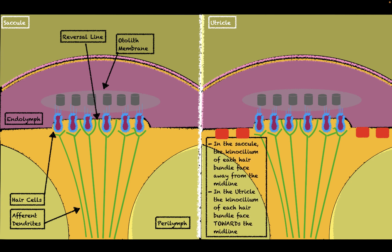In the saccule, the kinocilium of each hair bundle face away from the midline. In the utricle, the kinocilium of each hair bundle face towards the midline — that is one big difference. Another difference in the utricle is the presence of vestibular dark cells, which basically secrete potassium into the endolymph.